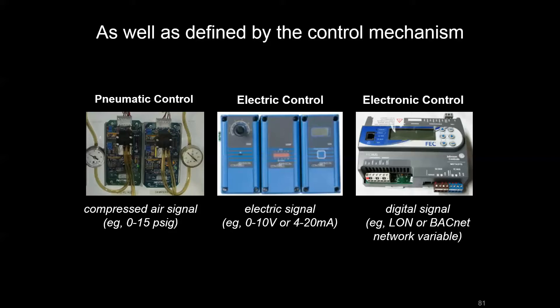With electronic control, also known as DDC or direct digital control, we still have that electric input/output, but we also have microprocessor-based controllers that can achieve more advanced sequences of operations and communicate with other controllers and possibly to a front end for enhanced automation. Understanding what the control infrastructure is running these airside systems will heavily determine what capabilities we have to modify the system and how sustainable those changes will be from an O&M perspective.